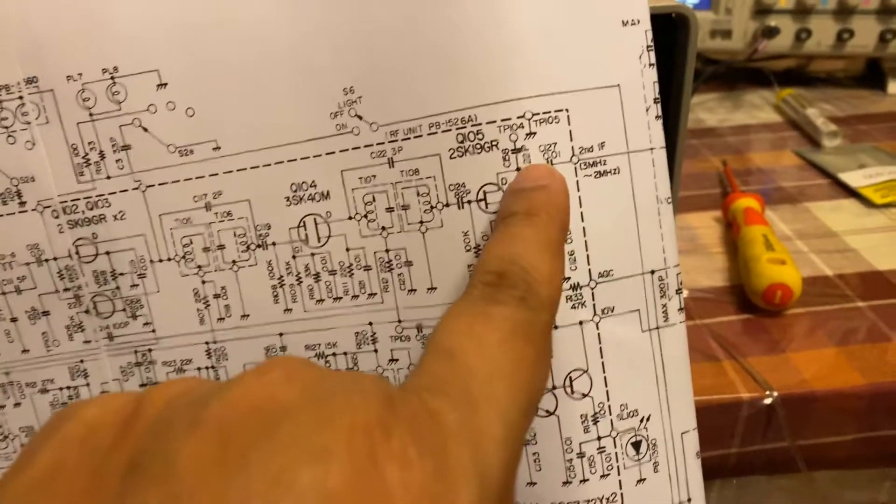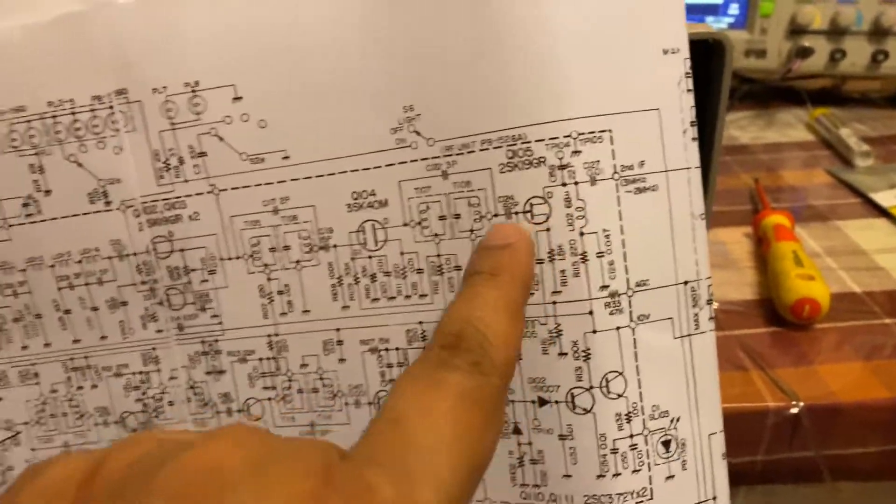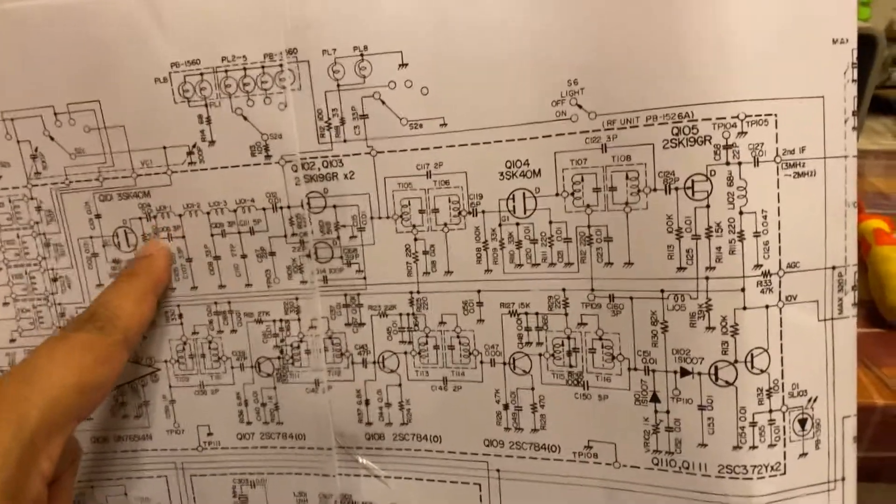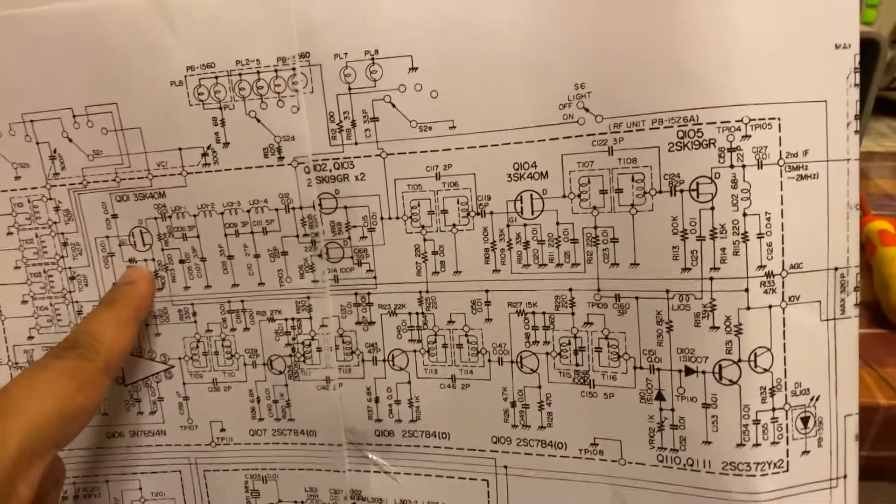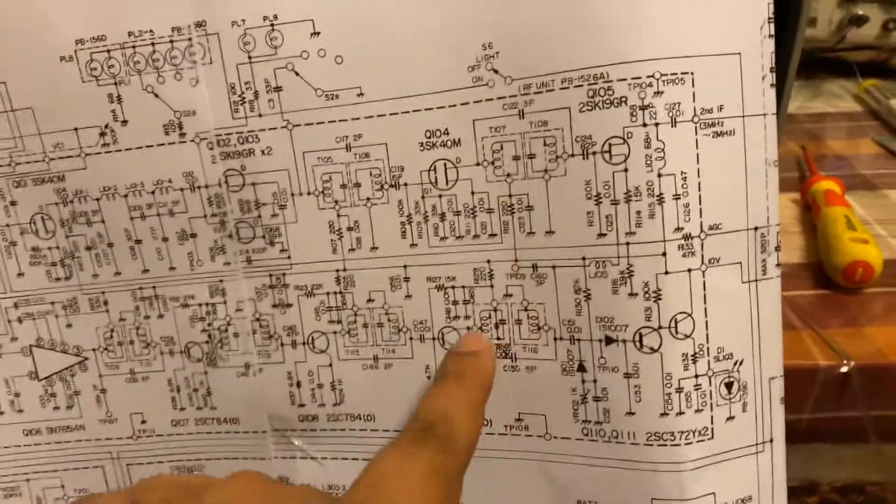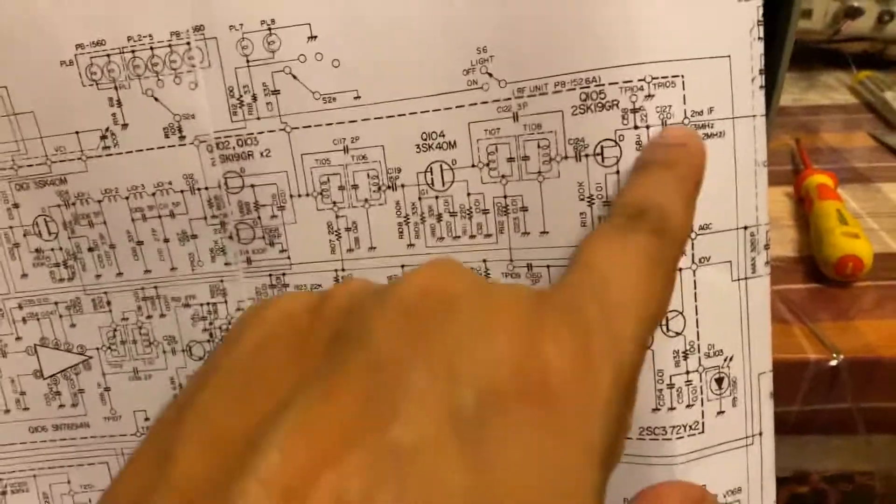And that was a problem. That was a big problem. So I figured most likely, given I'd already changed this FET and this FET, which are most likely culprits in these, already changed those two. And the signal was getting up to here, but not beyond. So the third mixer is this transistor,